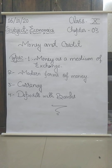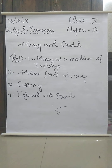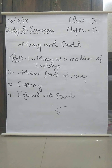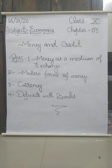Both parties have to agree to sell and buy each other's commodities. This is known as a double coincidence of wants. What a person desires to sell is exactly what the other wishes to buy — this is known as double coincidence of wants.